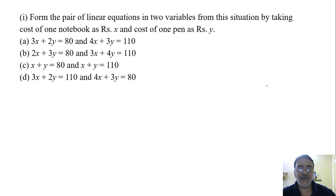Form the pair of linear equations in two variables from this situation by taking cost of one notebook as X and cost of one pen as Rs. Y. So Deepak nae 3 notebook or 2 pen kharida hai. Total Rs. 80. And Lohit nae 4 notebook or 3 pen kharida hai. Toh kaunsa equation kharida hai. Option A. Right. Option A. Correct.